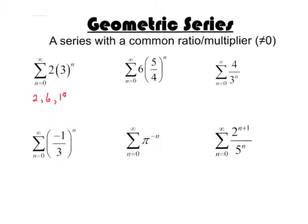And then if I plugged in 3, 2 times 3 cubed, or 2 times 27 would be 54. So what's happening here is that I'm multiplying by 3 every time to get to the next step. So the common ratio or multiplier is 3.